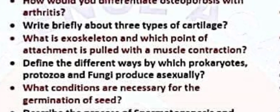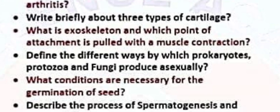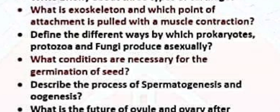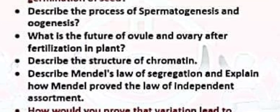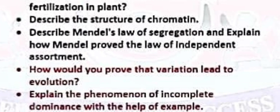Define the different ways by which prokaryotes, protozoa, and fungi reproduce asexually. What conditions are necessary for the germination of a seed? Describe the process of spermatogenesis and oogenesis. What is the fate of the ovule and ovary after fertilization in plants? Describe the structure of chromatin.